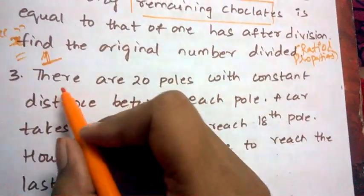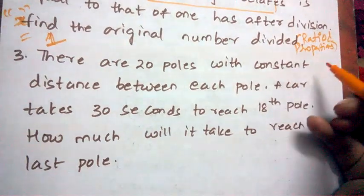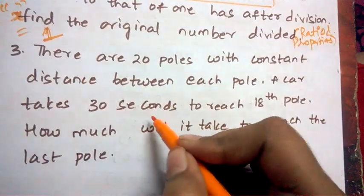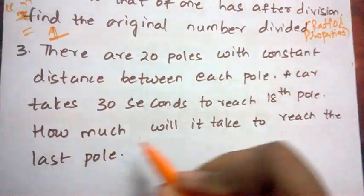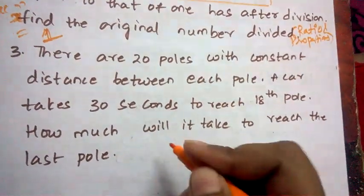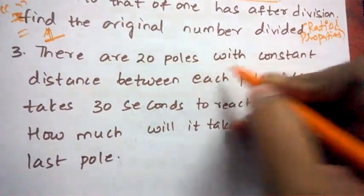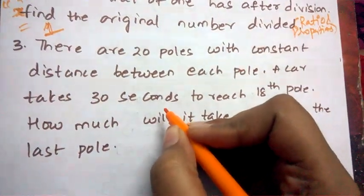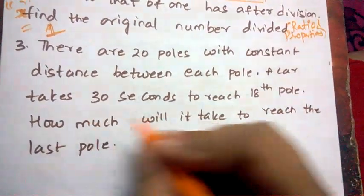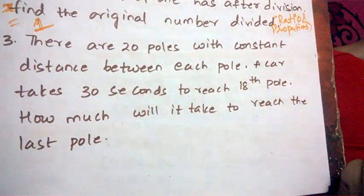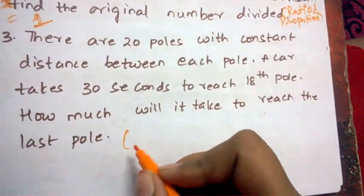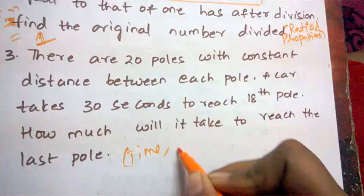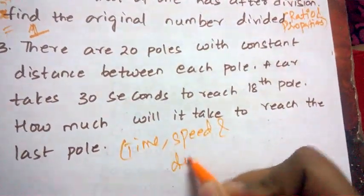Next question: There are 20 poles with a constant distance between each pole. A car takes 30 seconds to reach the 18th pole. How much time will it take to reach the last pole? This is a time, speed, and distance problem in quantitative aptitude.